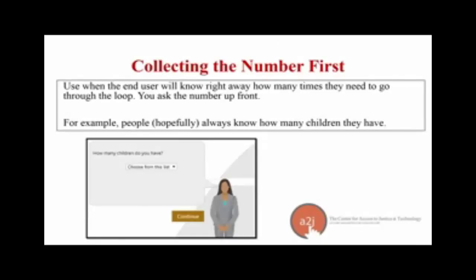The first way to create a repeat loop is to collect the number first. You use this when your end user will likely know right away how many times they need to go through the loop, and you ask for that number up front. In the screenshot here, we're asking 'how many children do you have?' People always know how many children they have, so they know how many times they need to go through a repeat loop that asks about their children.